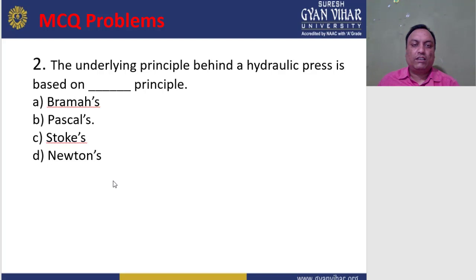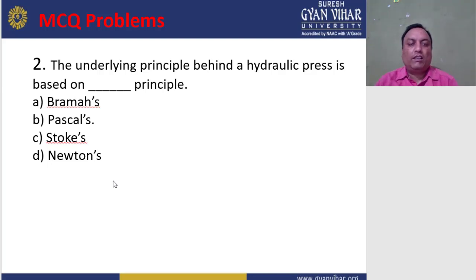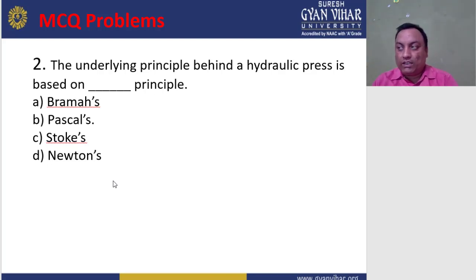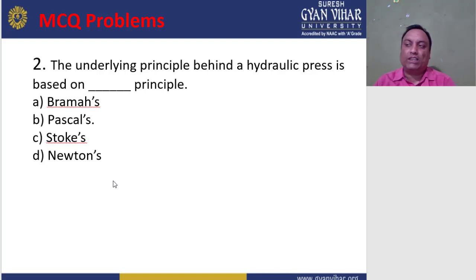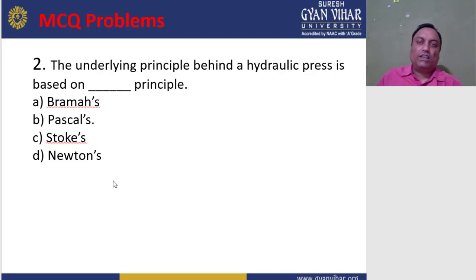Question 2: The underlying principle behind the hydraulic press is based on the principle of — a) Brahma, b) Pascal, c) Stokes, d) Newton. The correct answer is b — Pascal's principle — which states that pressure throughout a closed system is constant and is applied with equal force on equal area at right angles to the container walls.